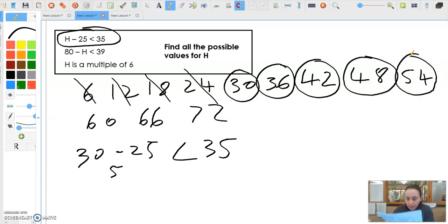And then finally, 60 minus 25, I've got 35 exactly. It can't be 35 because it'd be an equal sign. So it can't be that. There we go. So I was left with these five numbers here for the first one.